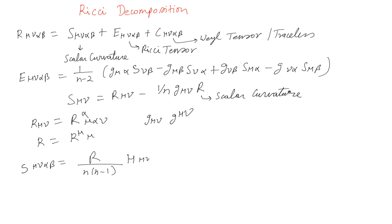Where H mu nu alpha beta is G mu alpha G nu beta minus G mu beta G nu alpha.